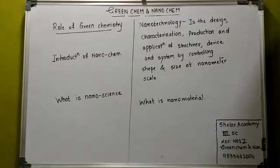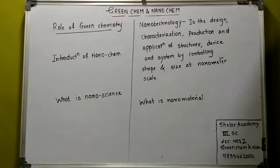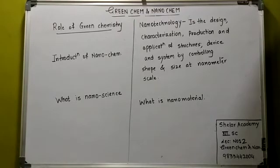What do you mean by nanochemistry? Nanochemistry is a combination of chemistry and nanoscience. Nanochemistry is associated with the synthesis of building blocks, which are dependent on size, surface, shape, and defect properties.